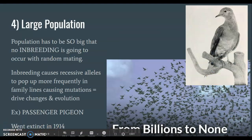Number four: in order for the Hardy-Weinberg principle to hold, you must have a large population. A classic example is the passenger pigeon, whose population was in the billions. With a population that big and random mating, you're pretty much guaranteed not to mate with a family member. But if the population becomes too small, you get inbreeding, and recessive alleles start to pop up in the family — resulting in things like six fingers or albinism. Six fingers appears in the Amish community; albinism is predominant in some Native American communities because of close relative connections that bring out those recessive alleles.